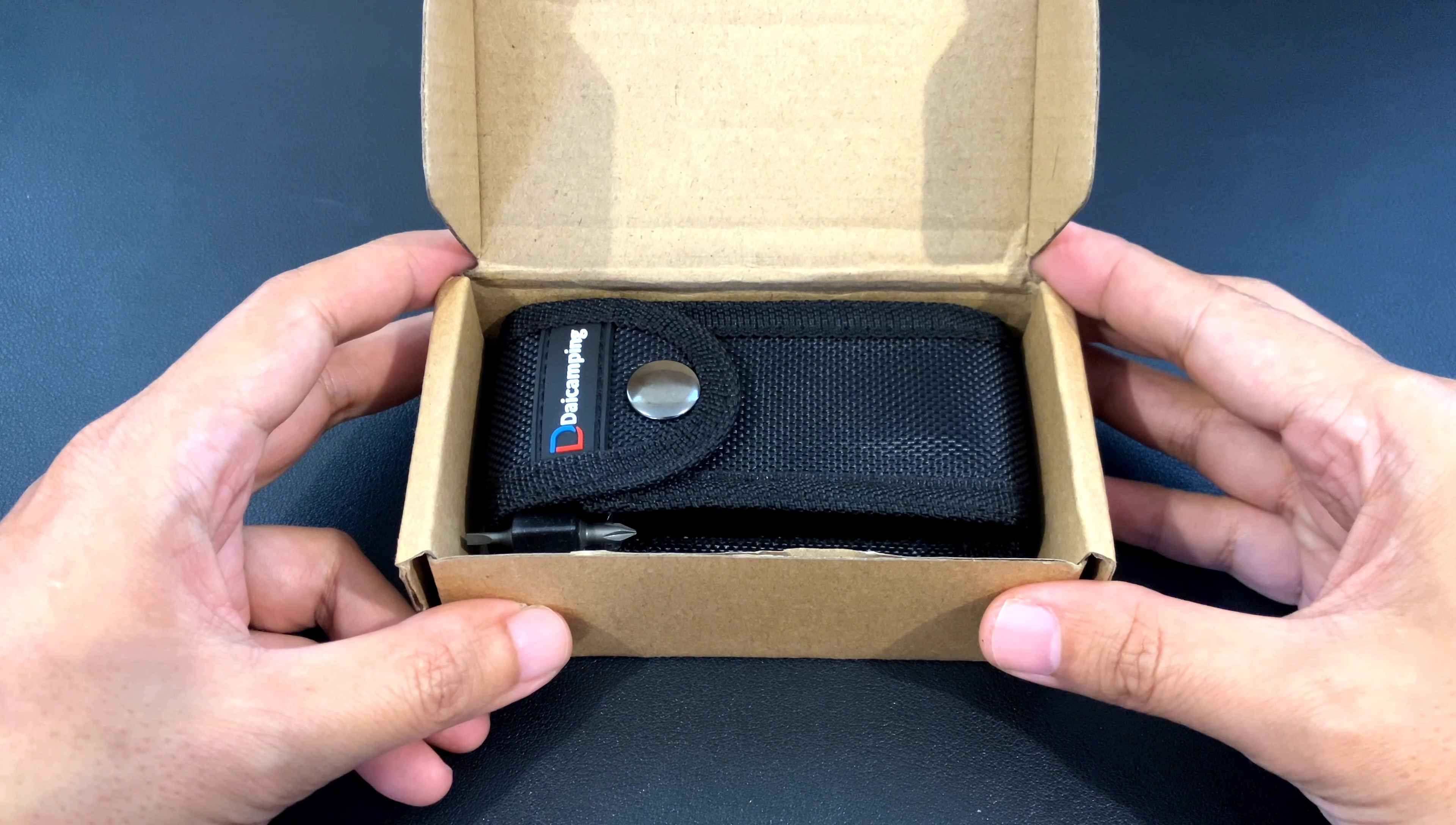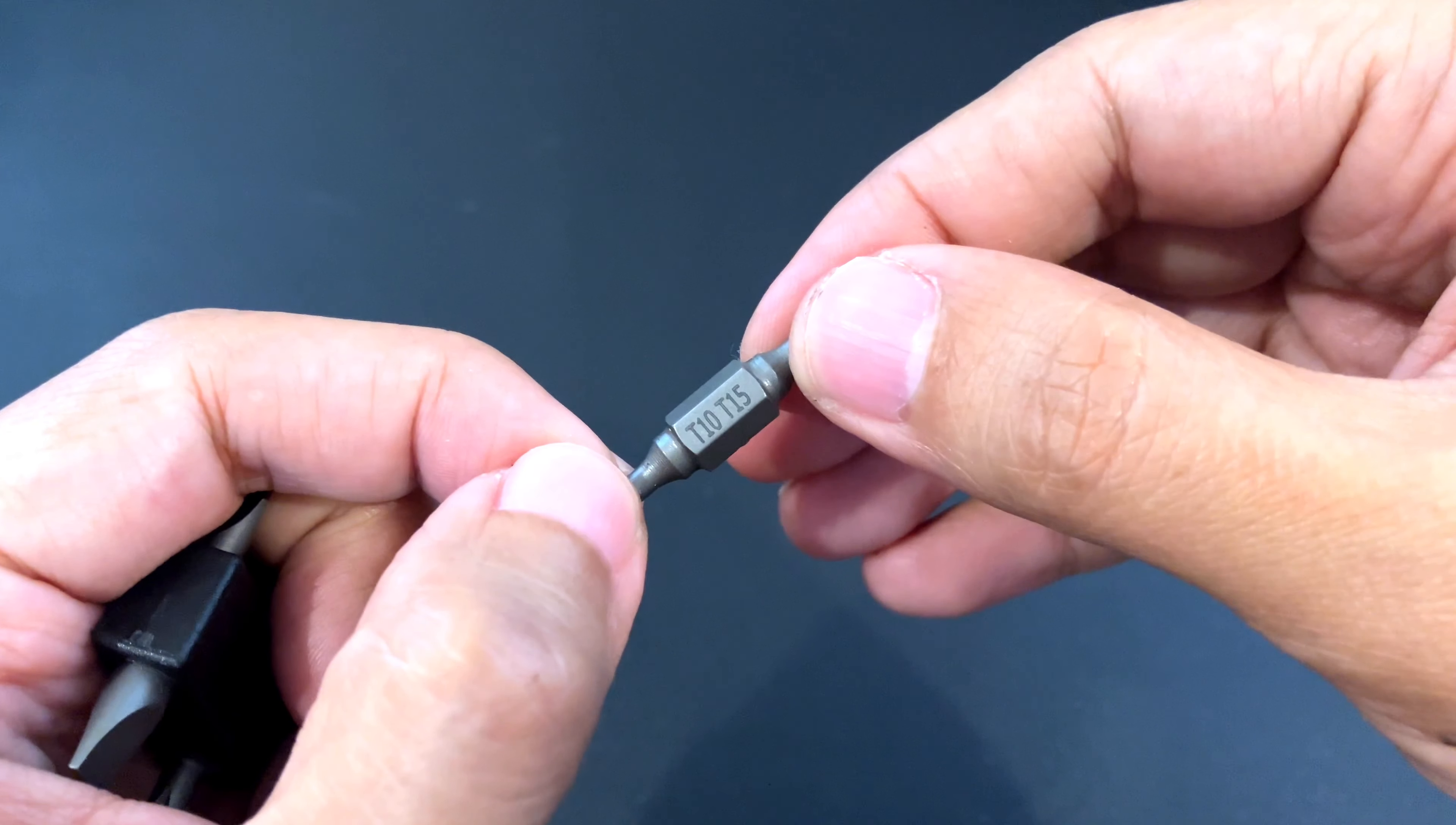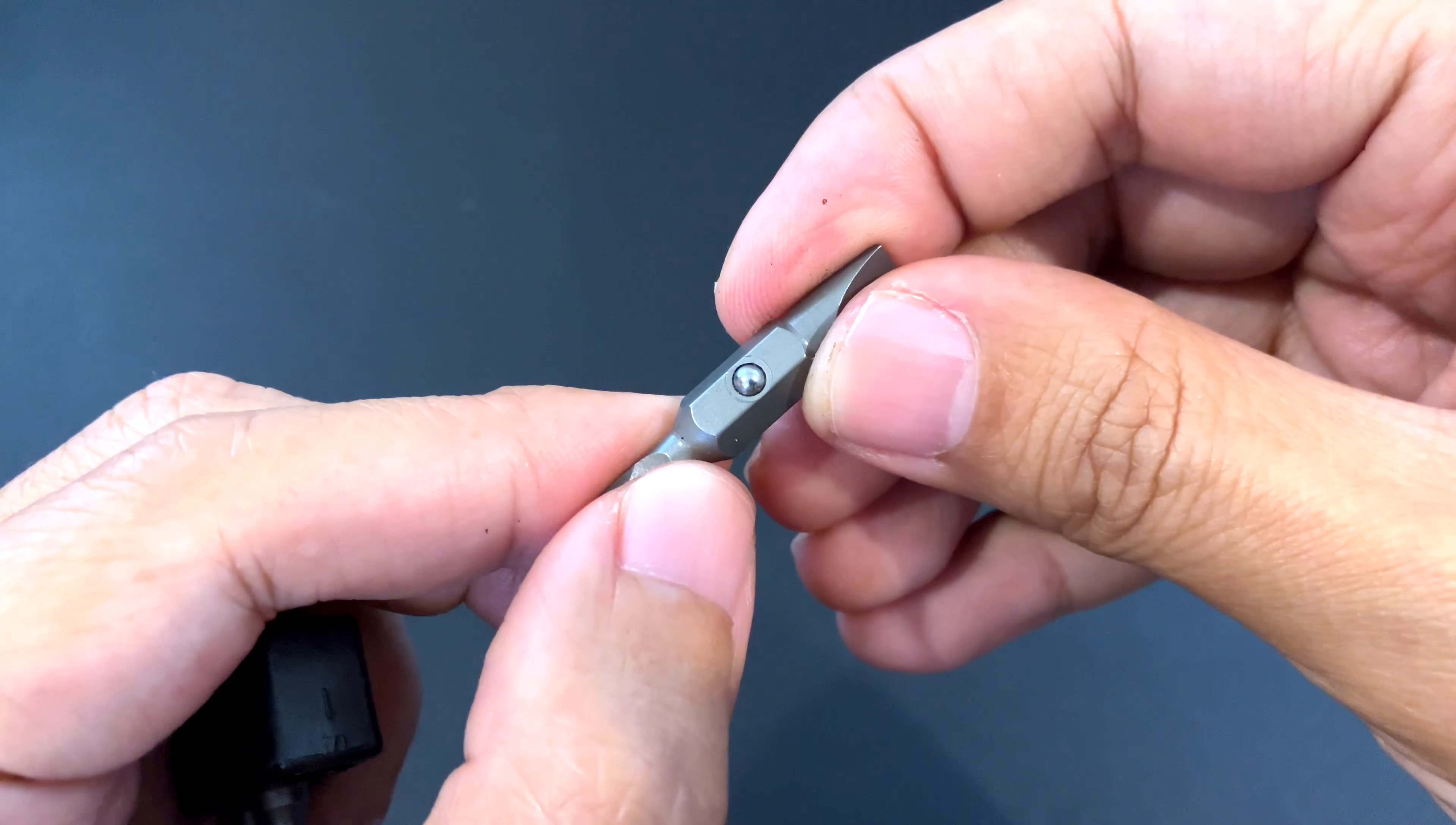Inside there's nothing much other than the tool itself and we have here extra bits. The bits are a Phillips 0 and a 2.5 millimeter flat head, then we have a T10 and T15 torque screws, and finally we have a 6 millimeter flat head and a 4 millimeter flat head. All of the bits have ball detents which is what's used to hold them in place.